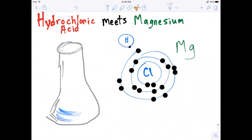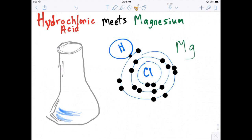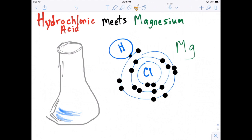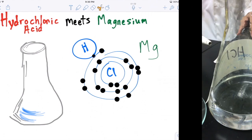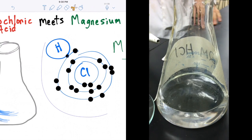So when hydrogen gets near chlorine, it says, 'I see you have one electron out here — let's share that electron.' Now chlorine feels like it has a full outer shell.